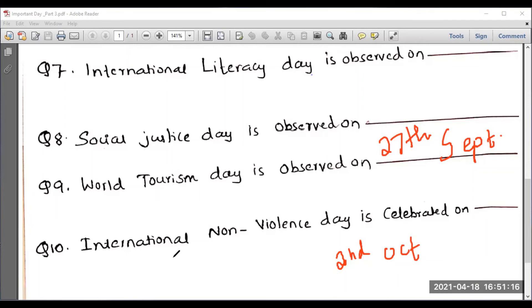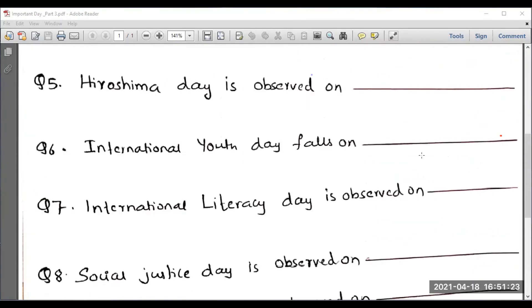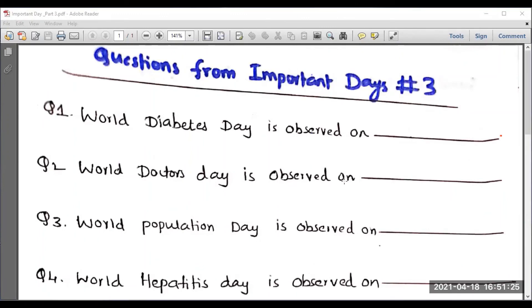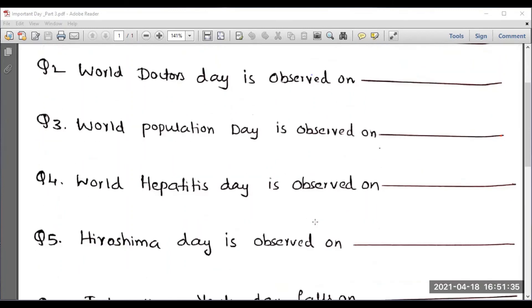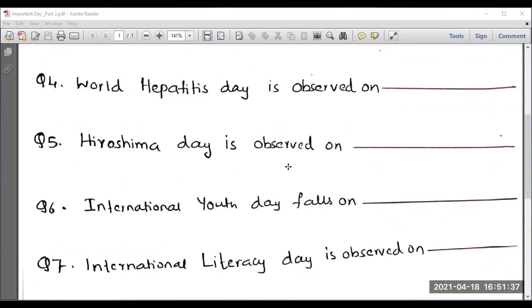Let us conclude. World Diabetes Day is observed on 14th June. World Doctors Day is celebrated on July 1st. Population Day is celebrated on July 11th. World Hepatitis Day is observed on 28th July. Hiroshima Day is celebrated on 6th August.